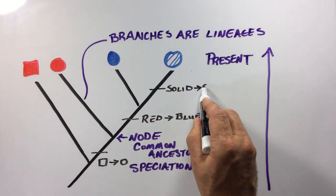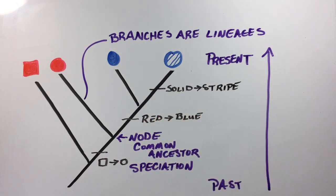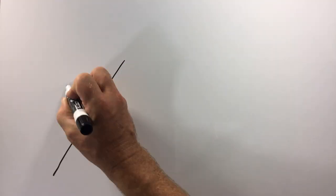As indicated by the traits of round, blue, and stripe in this tree, those traits arose due to some mutation and then became established in those lineages. Let's zoom in on the phylogeny to consider what that means.